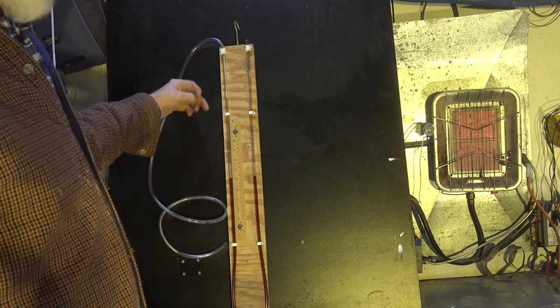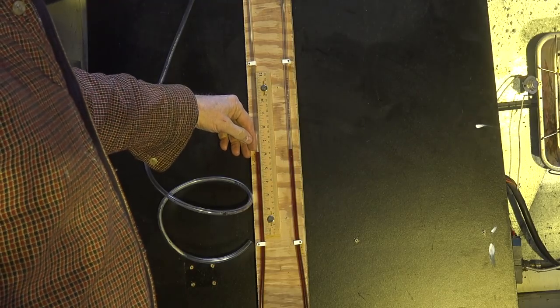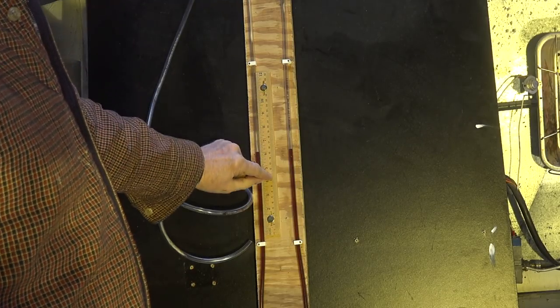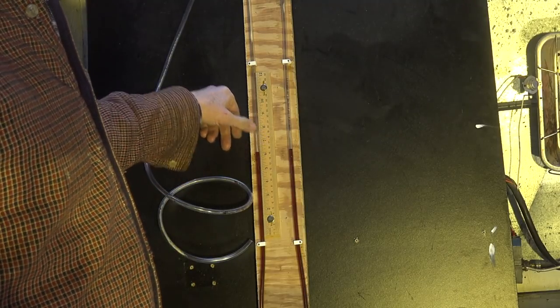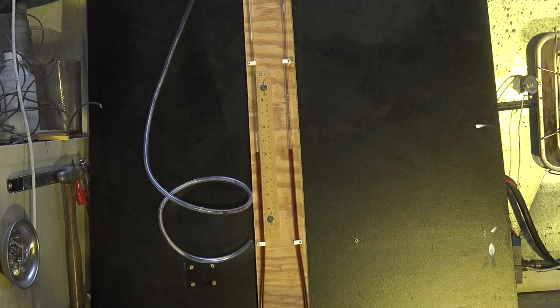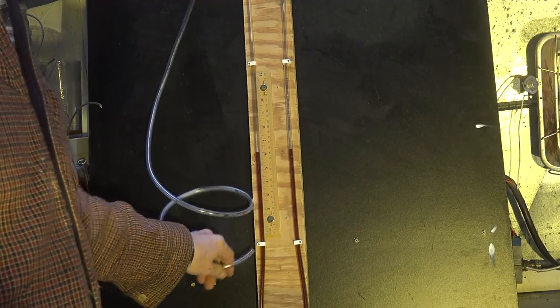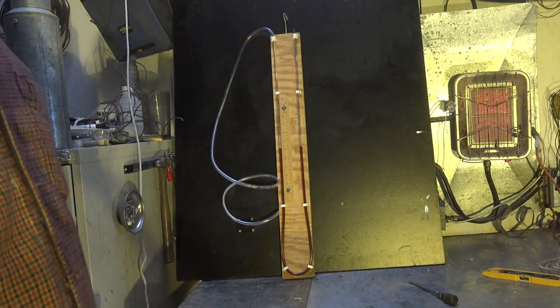But when you put your oil in this or your water, whatever you're putting in it, you put it in there and then you make this slide adjustment on the ruler to zero it out at whatever you want to zero it at. So pretty simple. Obviously, this is what hooks up to the gas valve port.